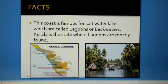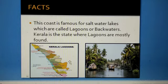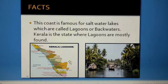Some facts about the western coastal plains: the Malabar coast is famous for salt water lakes, which are also called lagoons, or we can call them backwaters. Children should know that Kerala is the state where most of the lagoons are found.